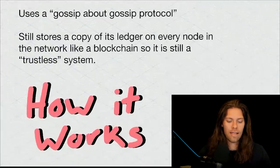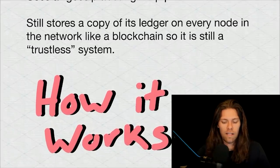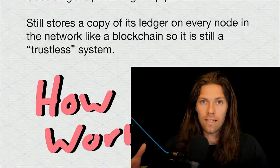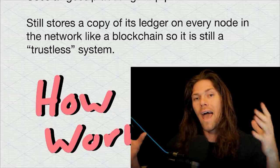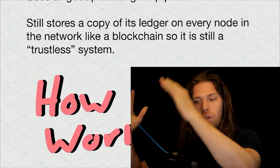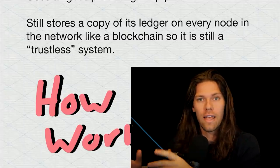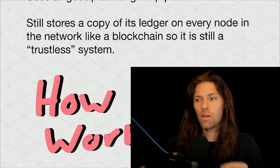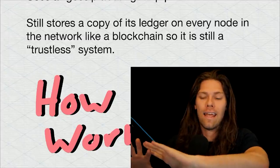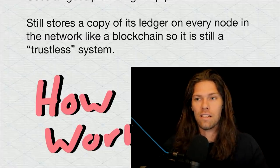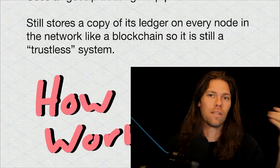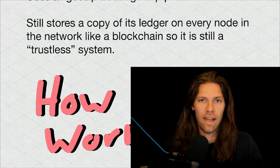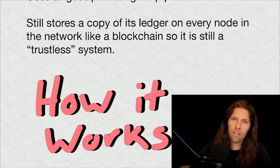Hedera is the only public ledger that uses Hashgraph consensus, a faster, more secure alternative to blockchain consensus mechanisms. It uses a gossip about gossip protocol. Don't worry, all this is going to make sense in a minute. It still stores a copy of its ledger on every node in the network like blockchain, so it's still a trustless system. On a blockchain network, you have nodes and each one has a public list of all the transactions that has ever happened on that crypto network. That's why it's decentralized, that's why this is revolutionary. One node can go away and the rest still have all the information. You don't have to bank on someone like Visa or a government to hold this information. You don't need to trust everyone else in the system. It's validated, it's there.